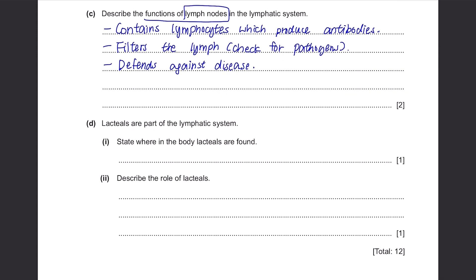Part D. Lacteals are part of the lymphatic system. State where in the body lacteals are found — they are in the small intestine, or more specifically in the villi. Describe the role of lacteals: unlike lymph nodes, this is not about pathogens. Lacteals are responsible for fat absorption or fat transport.